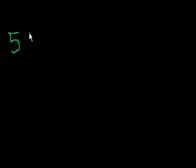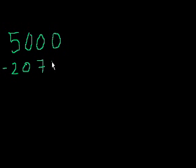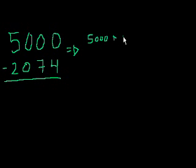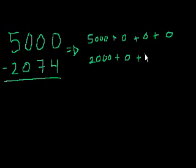I'm going to write it out with the SAL expansion style, because I really want you to understand what you're doing. If you know what you're doing, you'll never get confused or forget the next step, because they won't just be steps to you — they will be actual sense-making operations. 5,000 minus 2,074. That equals 5,000 plus 0 hundreds plus 0 tens plus 0 ones. And the bottom number is 2,000 plus 0 hundreds plus 70 plus 4.